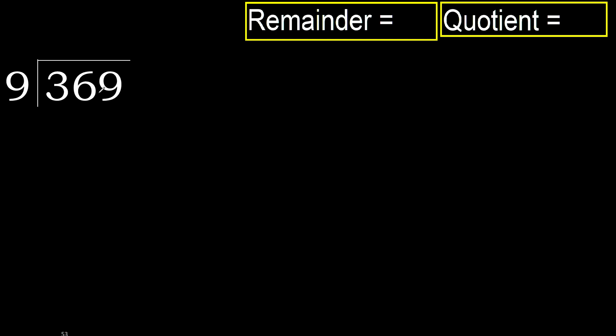369 divided by 9. 3 is less, therefore next. 36 is not less, therefore, we work with 36.